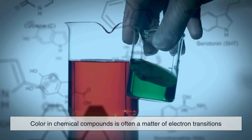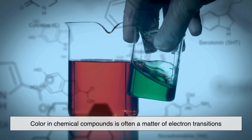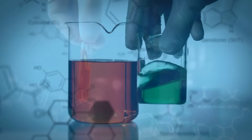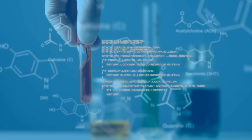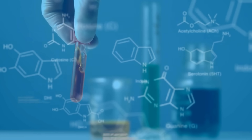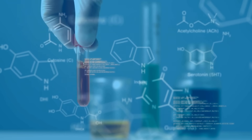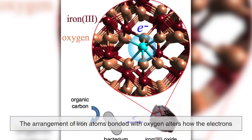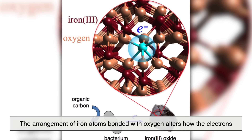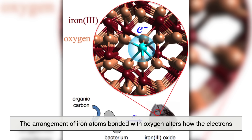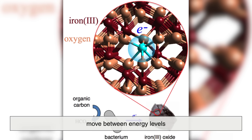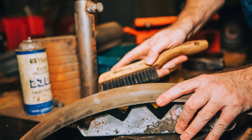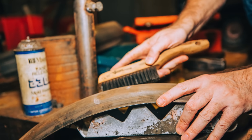Color in chemical compounds is often a matter of electron transitions. When light hits a substance, some wavelengths are absorbed while others are reflected back to our eyes. The ones reflected are what we perceive as color. In the case of rust, the arrangement of iron atoms bonded with oxygen alters how the electrons move between energy levels. The reflected light comes back to us in those distinctive orange and reddish tones.